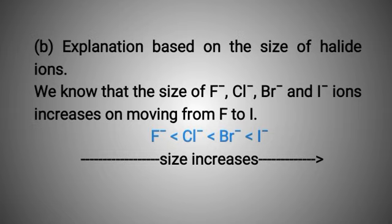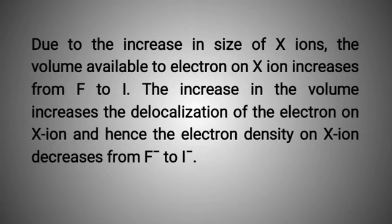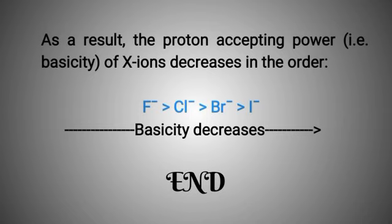Explanation B: based on the size of halide ions. The size of fluoride ion, chloride ion, bromide ion, and iodide ion increases on moving from fluoride ion to iodide ion. Due to this increase in size, the volume available to the electron on the halide ion increases from fluoride ion to iodide ion. The increase in volume increases the delocalization of the electron on the halide ion, and hence the electron density on the halide ion decreases from fluoride ion to iodide ion. As a result, the proton-accepting power, i.e., basicity, of halide ions decreases from fluoride ion to iodide ion.